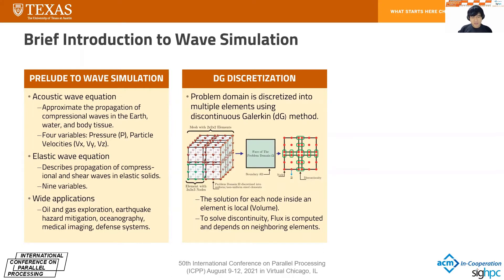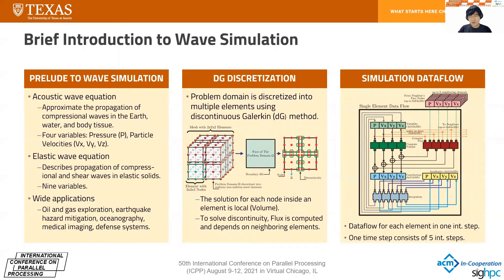Because we evaluate node solutions inside each element, there is a discontinuity between elements and we have to solve it using flux. Flux is computed and depends on neighboring elements' data. So there are two types of computation: volume, which is local computation, and flux, which is inter-element computation. Our simulation data flow consists of computing volume contributions and computing flux contributions, which requires neighboring element data. Both contributions are summed together and then integrated to update the variables. This data flow is done for every integration step, and one time step consists of five integration steps.